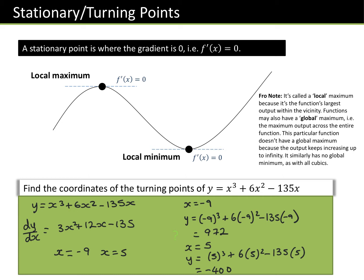The question says find the coordinates, so we write them. When x = −9, y = 972, and when x = 5, y = −400. From the diagram, the point on the left is (−9, 972) and the point on the right is (5, −400). But sometimes we're not given the graph, so we'll come to finding the nature of the stationary point later.